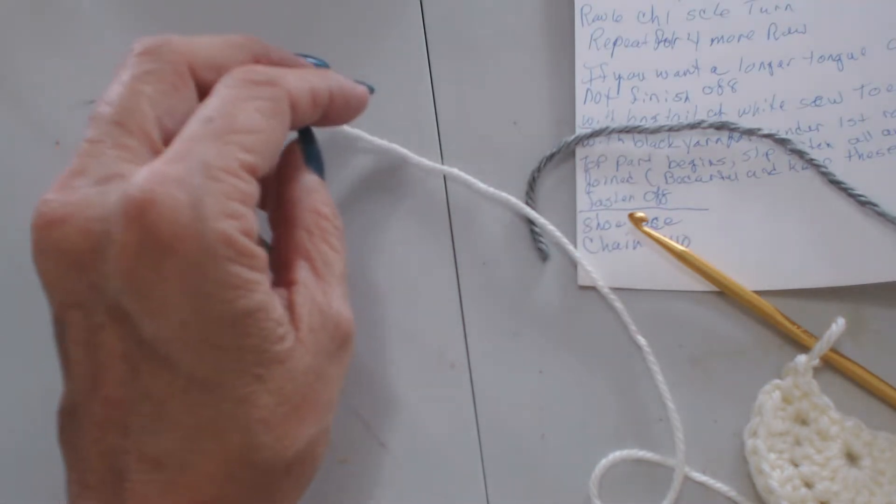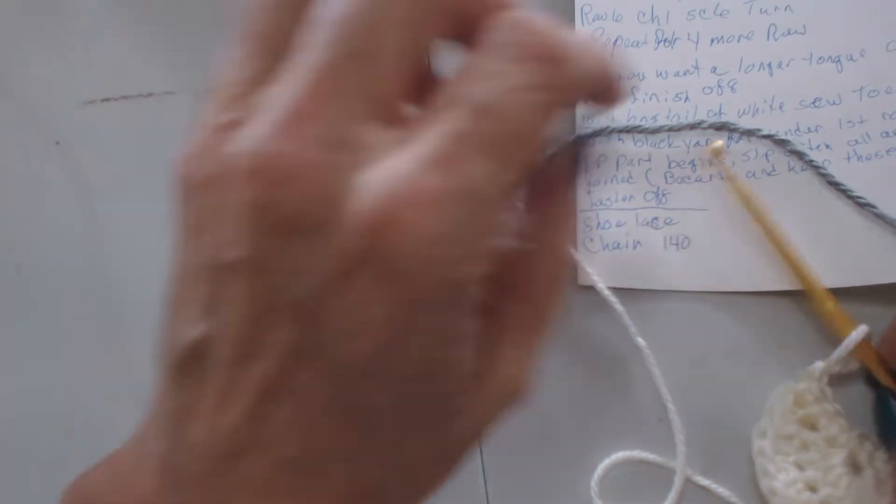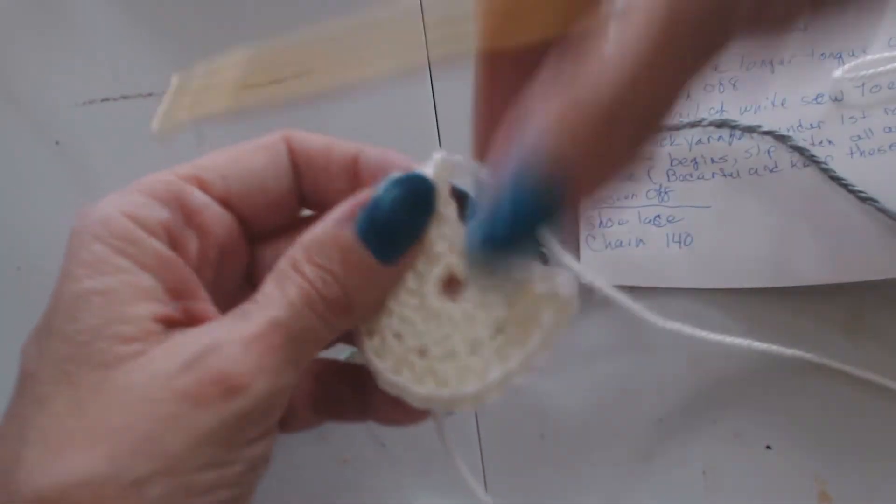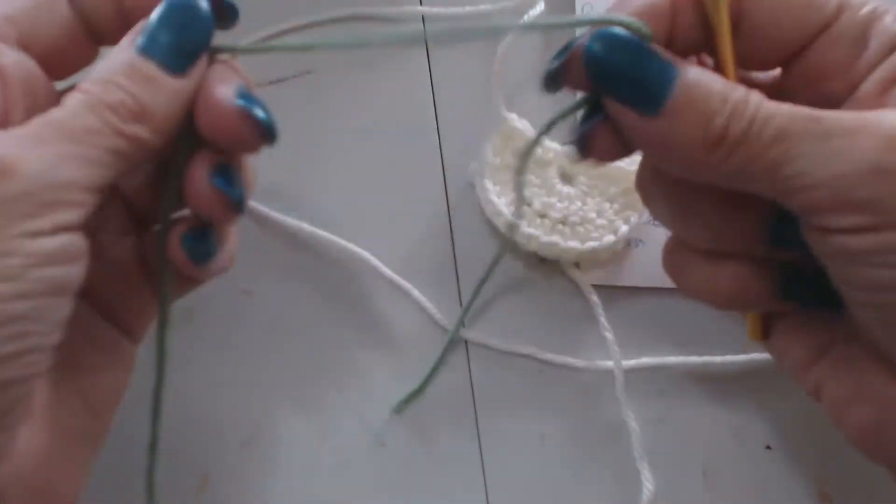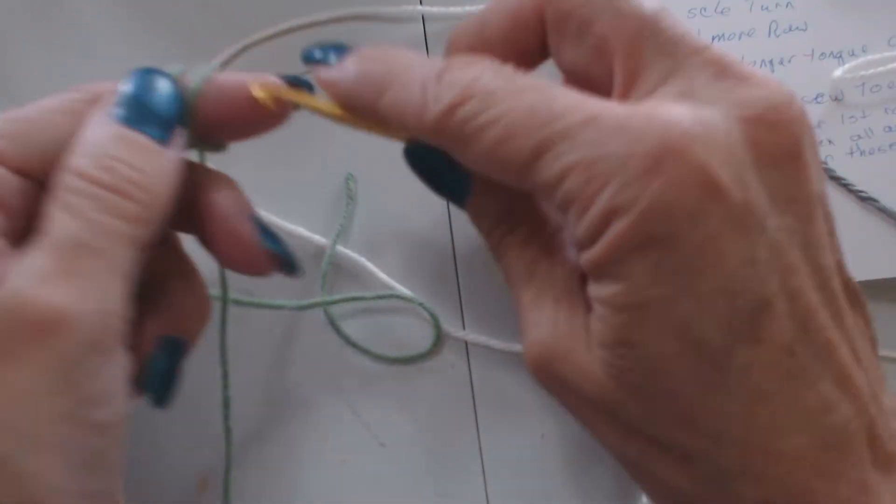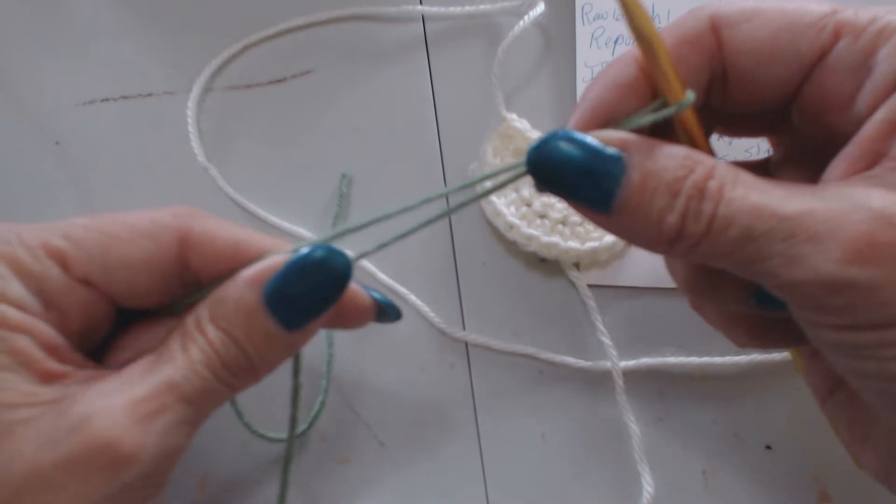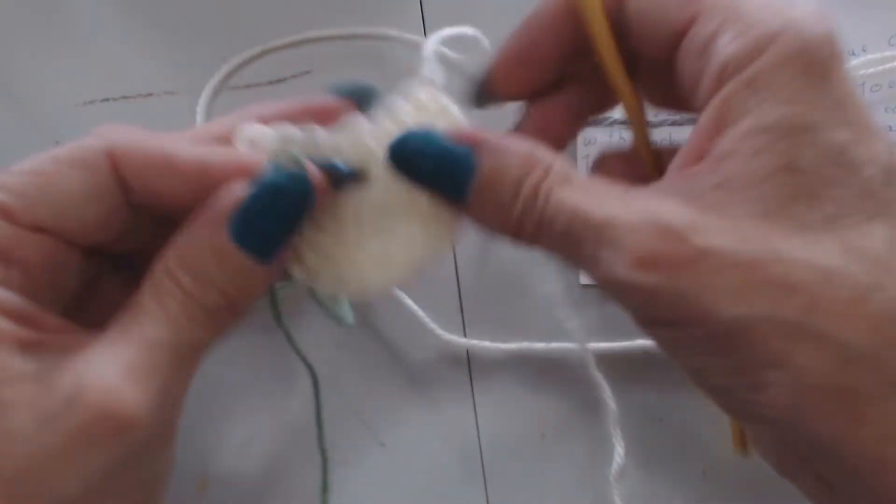And we get our contrasting color which is the green that I used before. I'm going to pull this through. I'm going to take my tail here, my green, build me a loop, flip it over.